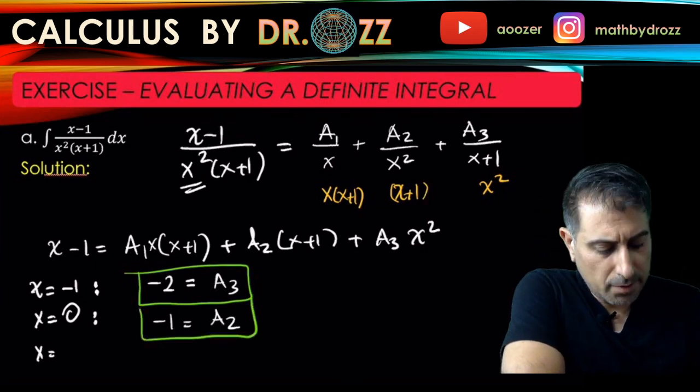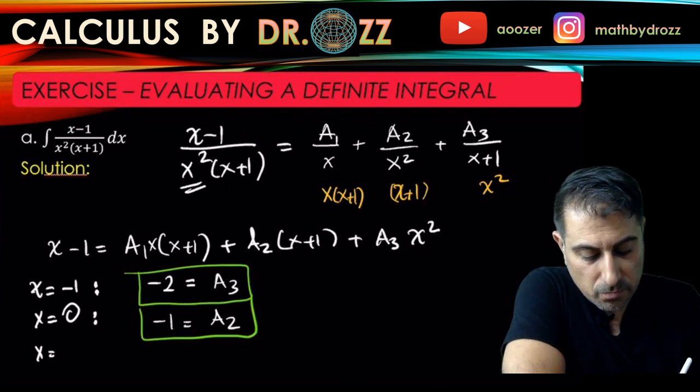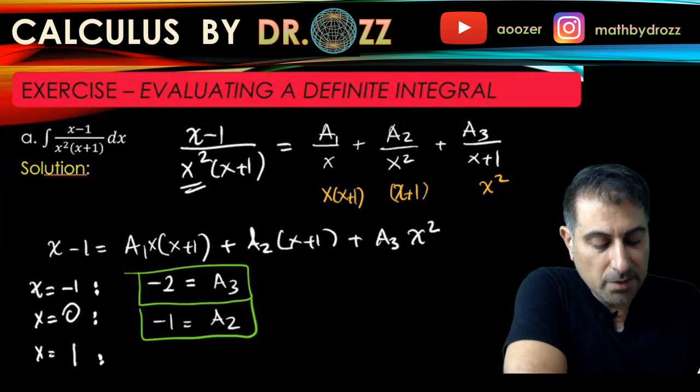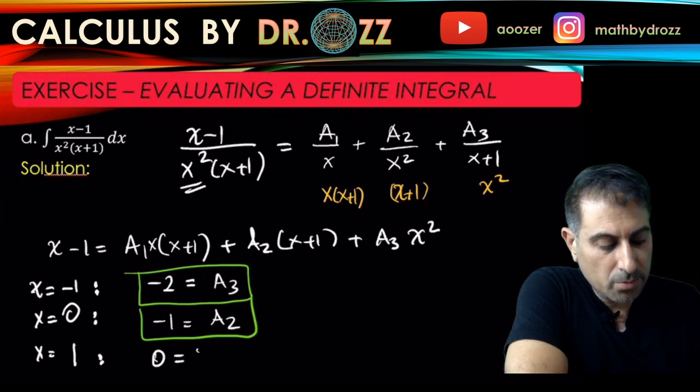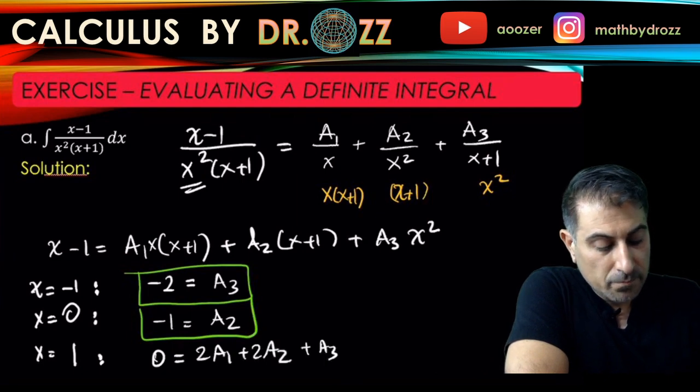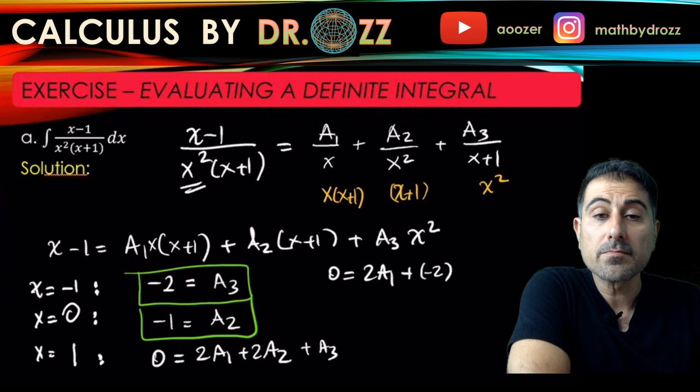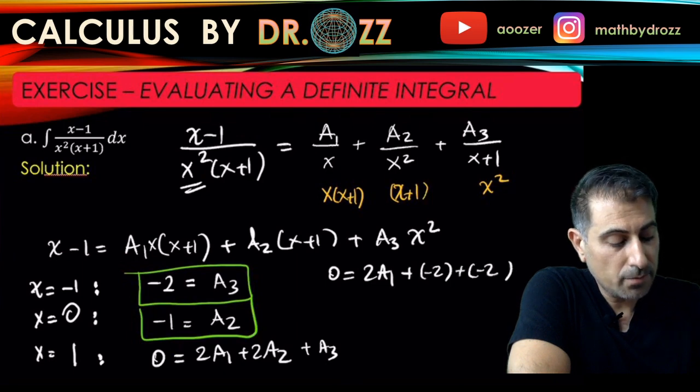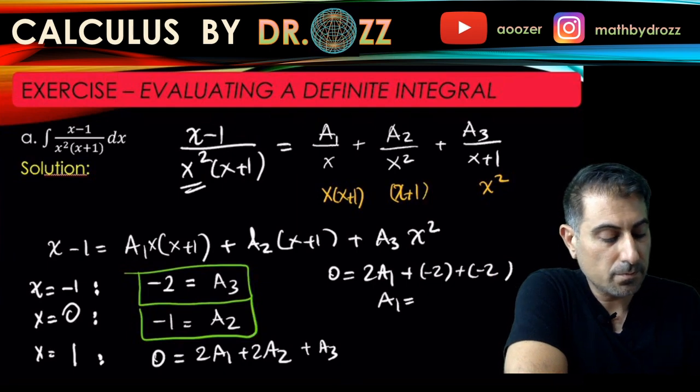And then let's choose another factor here, maybe 1. That's an easy number to work with. Left-hand side is 0, right-hand side is 2A1, 2A2 plus A3. 0 equals 2A1 plus 2A2, which is minus 2, and then A3 plus another minus 2. That implies that 2A1 equals 4, A1 equals 2.